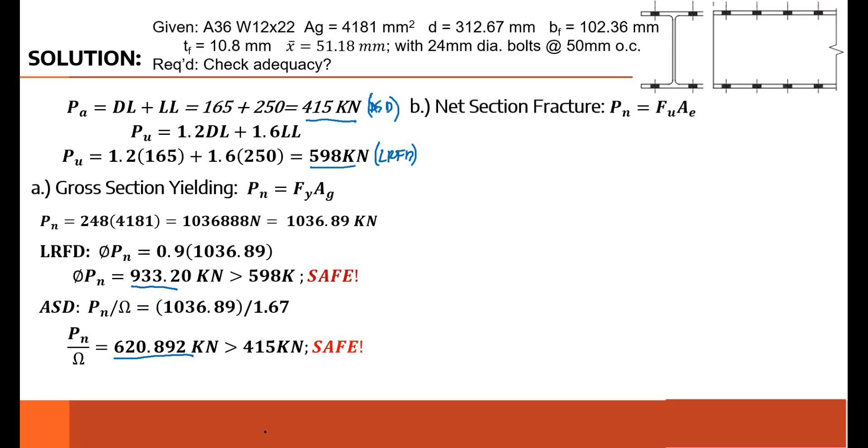The second possible limit state is net section fracture: PN = FU × AE. The FU is not given, but we should know it's 400 for A36. What is AE? AE would be capital U times AN. I'll solve for AN first.